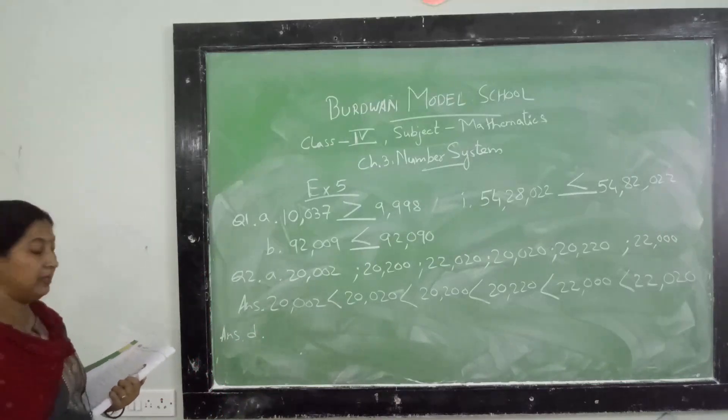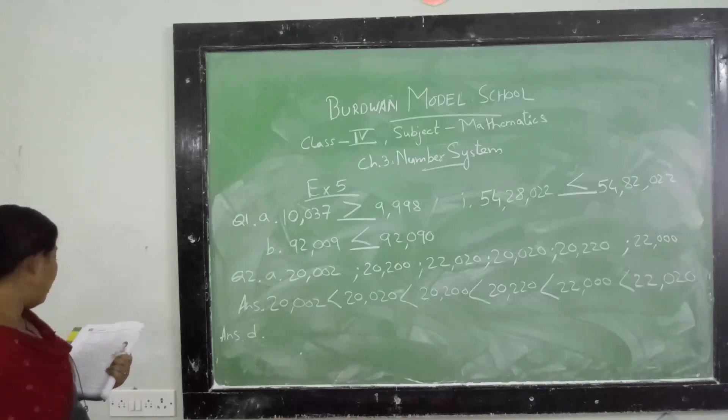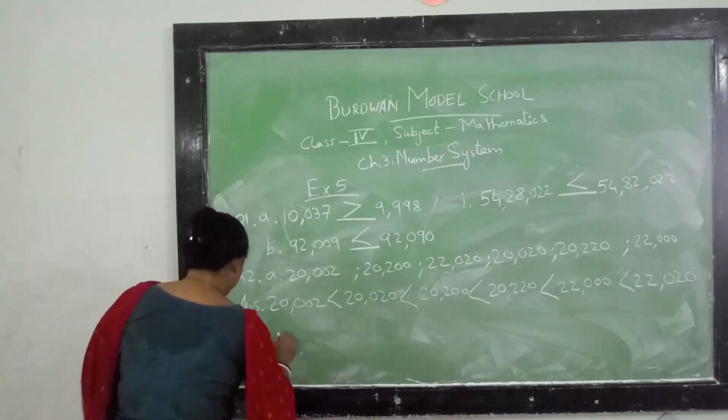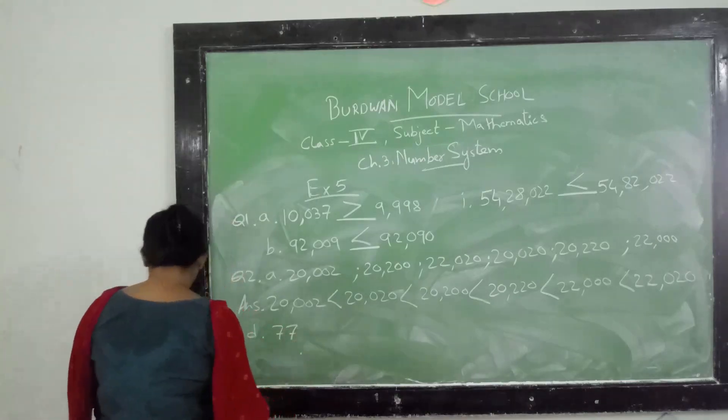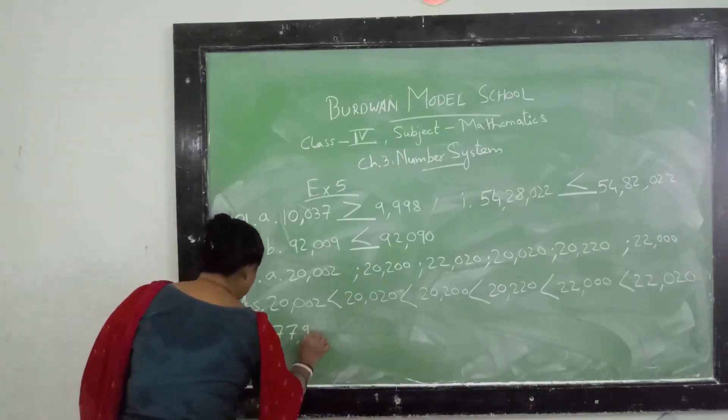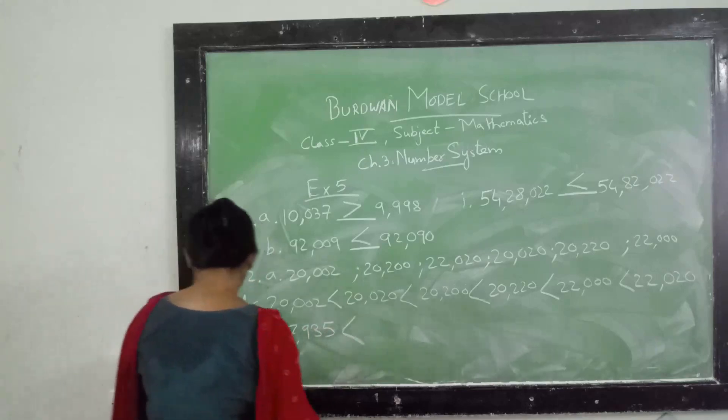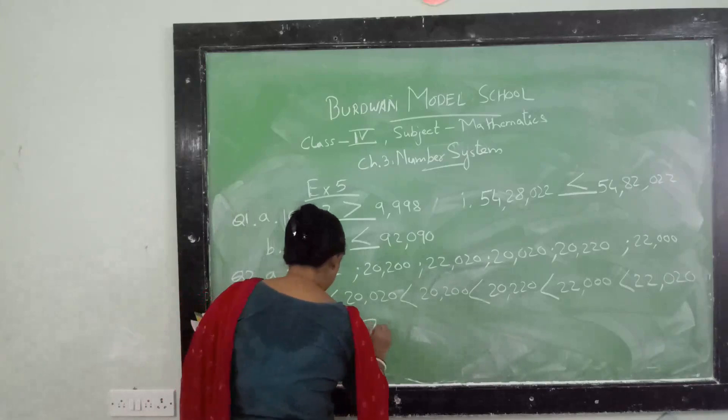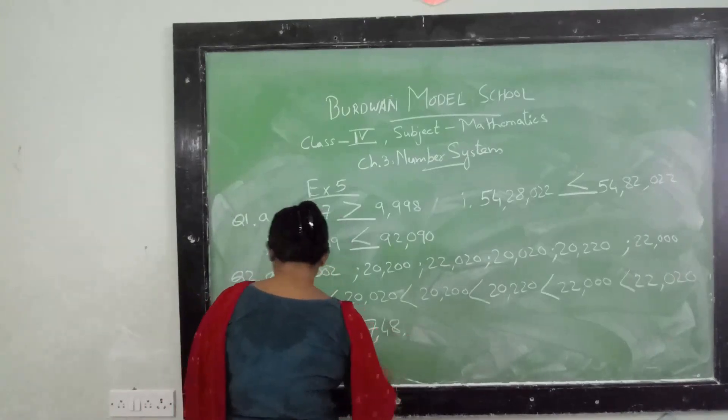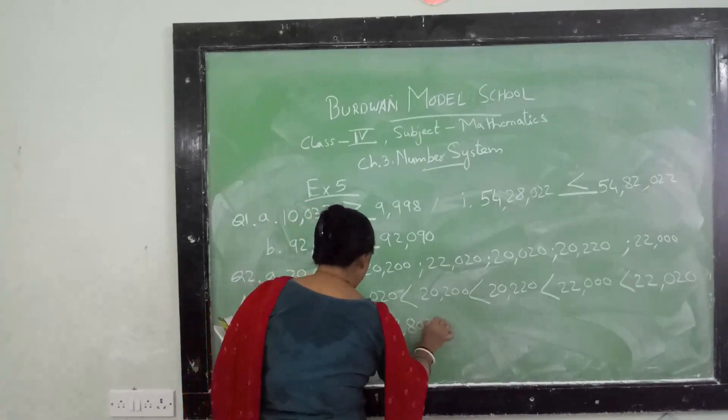For number d, which one will be the first one, that means which is the smaller one? That is 7,77,935 less than 7 lakh 48 thousand 805, then again less than 7 lakh 84 thousand 885.